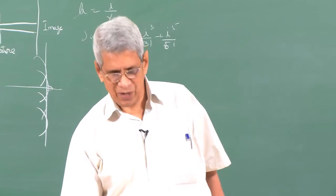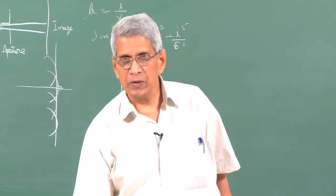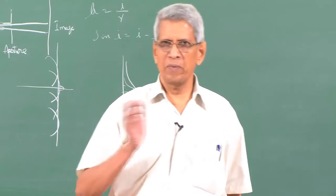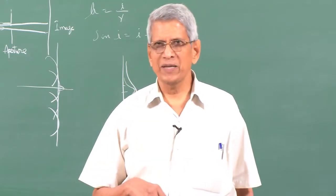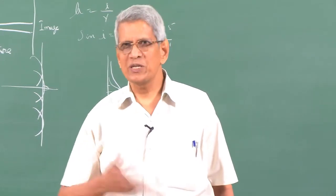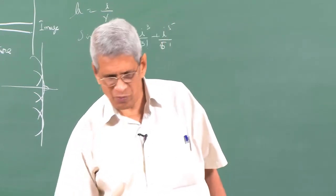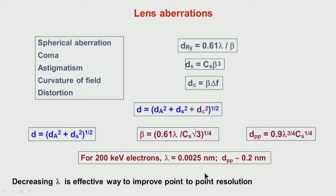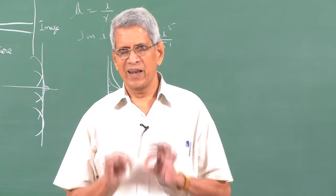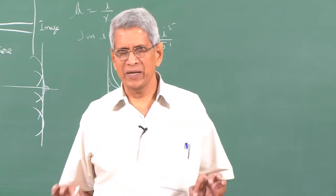To improve resolution, one can decrease lambda — this led to the development of high-voltage microscopes operating at 1, 2, or 3 million volts. Alternatively, the spherical aberration coefficient Cs can be reduced at normal operating voltage — these are called aberration-corrected microscopes. We have now covered how to calculate resolution for a lens with aberrations.